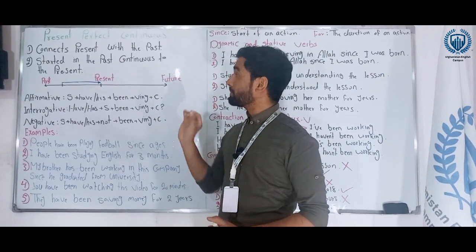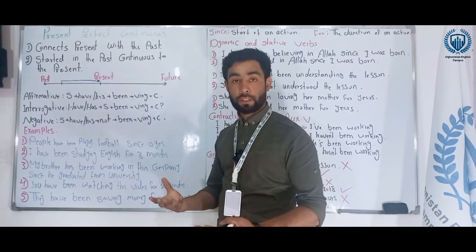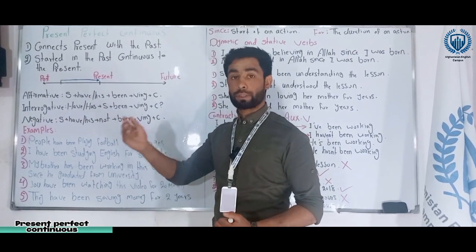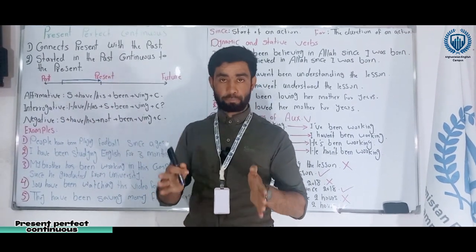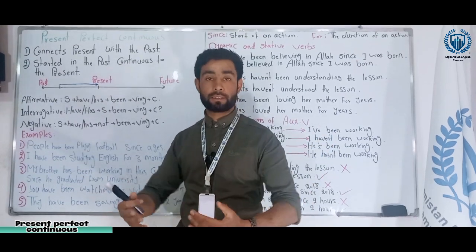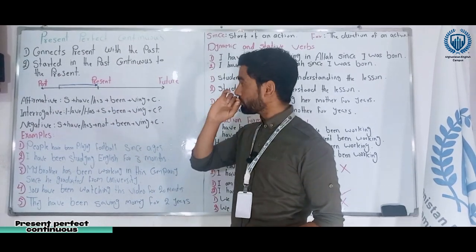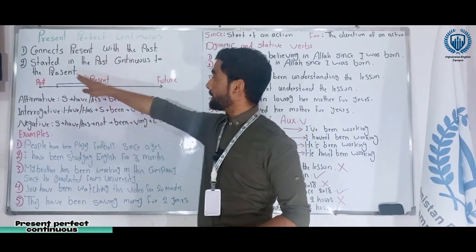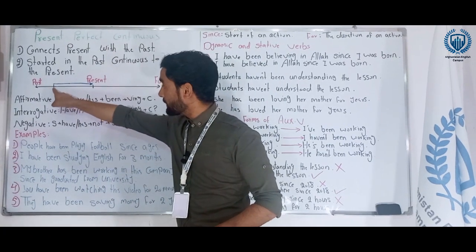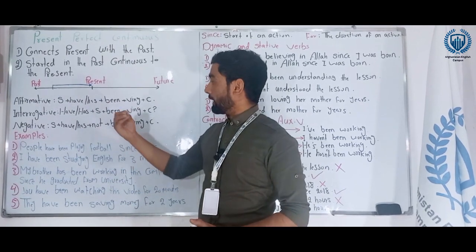Present perfect continuous tense is a tense which connects the present with the past. It shows a kind of action that started in the past, comes to the present, and may or may not continue into the future. We use this kind of sentence structure in our own native languages as well, so we need to understand how to use it in English.